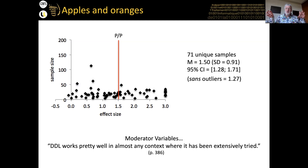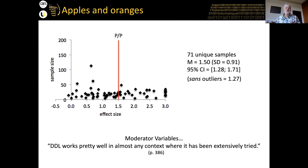You can look at moderator variables — the type of technology, the type of interaction (hands-on or on paper). What we found was DDL works pretty well in almost any context where it has been extensively tried. Anything where we had at least 10 studies, we found a high intermediate or large effect size. But even if it does work almost everywhere, that still doesn't explain the variation. So a meta-analysis is useful, but it doesn't have all the answers.